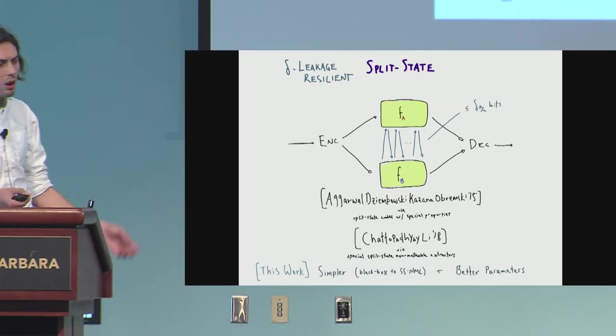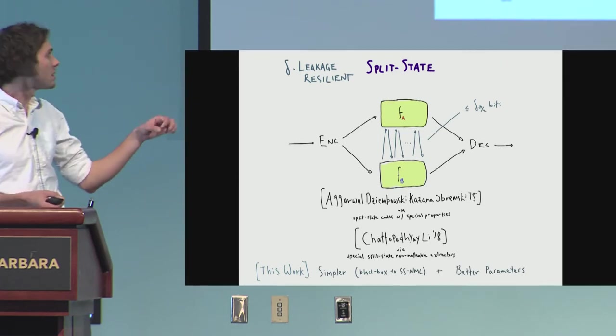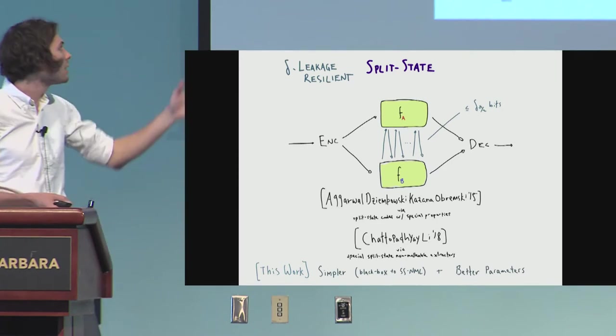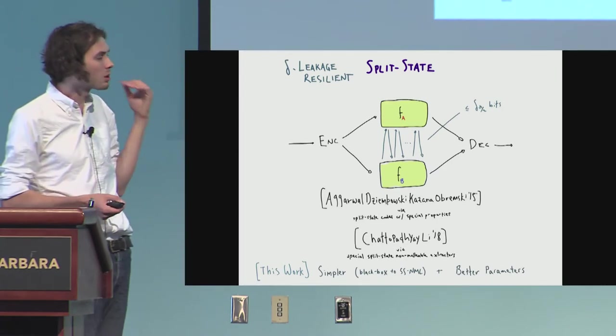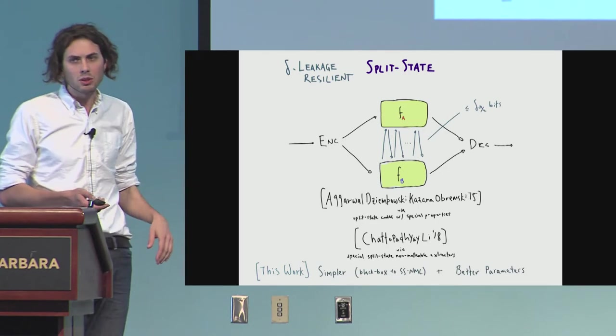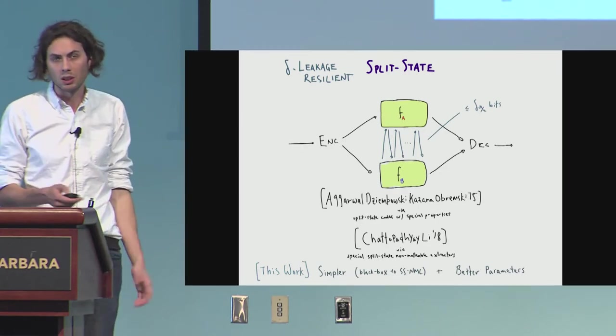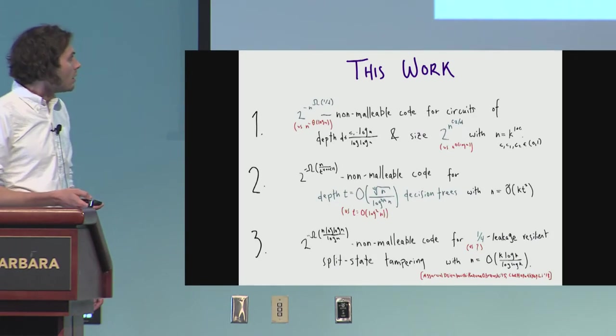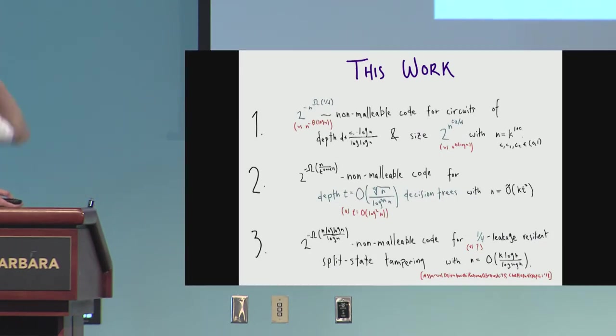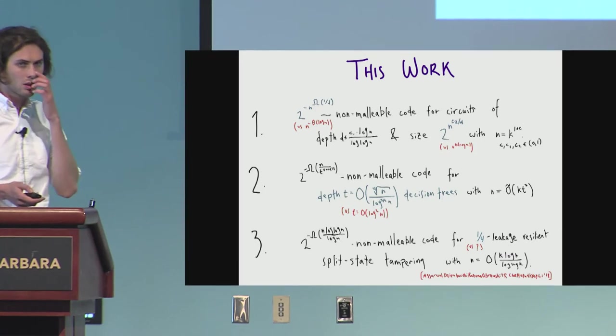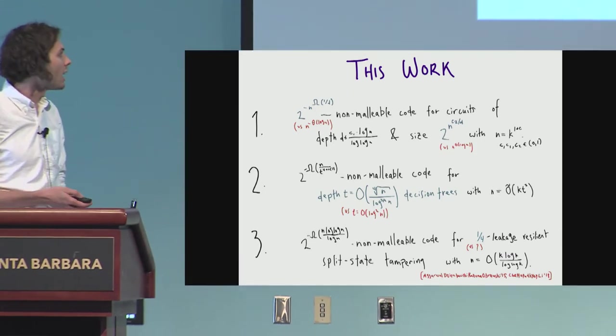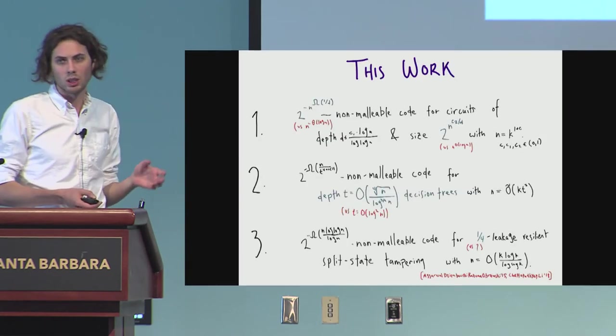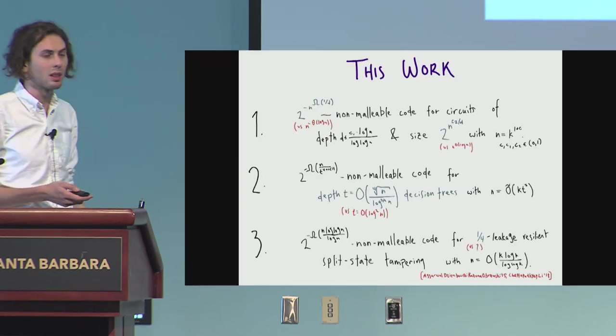Chattopadhyay and Li constructed these things via non-malleable extractors. And in this work, we give a new construction that's, in our view, much simpler. And it's also a black box reduction from this leakage-resilient split-state to split-state. So it works whatever split-state code you start with, and it gives you better parameters in terms of leakage, or at least explicit parameters in terms of leakage.